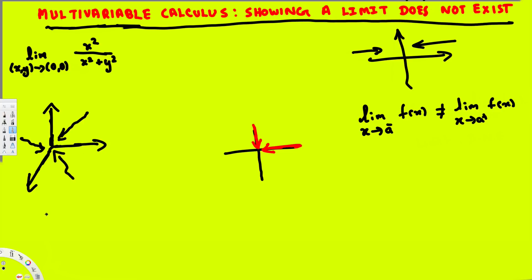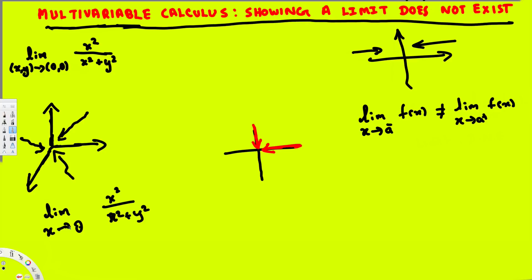Let's work through the example. First, consider the limit as X approaches zero — that is, we set y fixed and let x go to zero. The x values become zero, so we get zero over (zero plus y²), which gives us zero over y², and that equals zero. So when X approaches zero, the limit is 0.